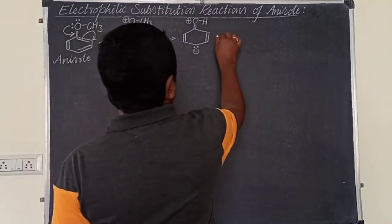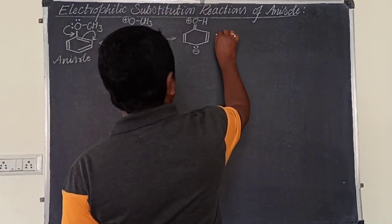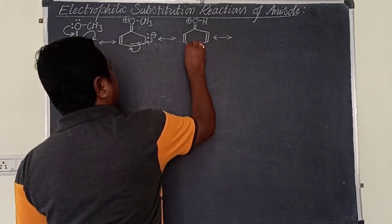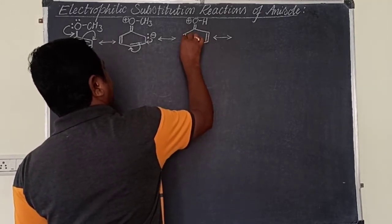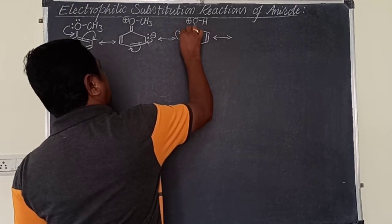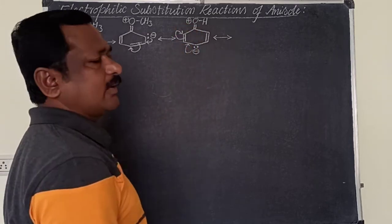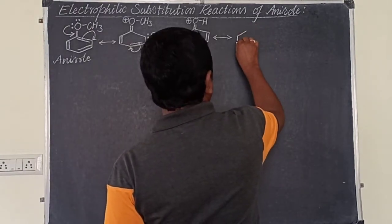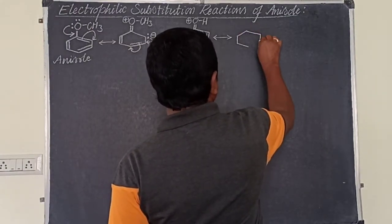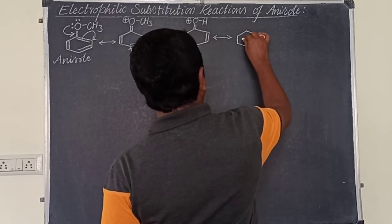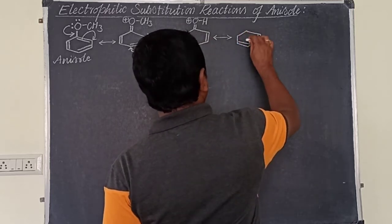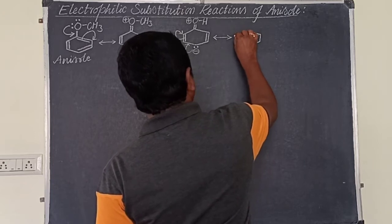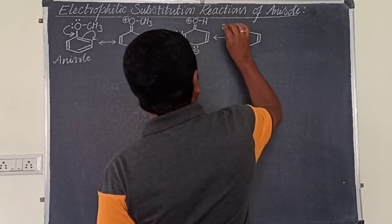Next, the third pi bond is also delocalized. When these electrons are shifted to the adjacent carbon, the third pi bond's electrons are delocalized too. As a result, we get the next resonance structure, where the adjacent carbon, by gaining the electron, develops a negative charge.